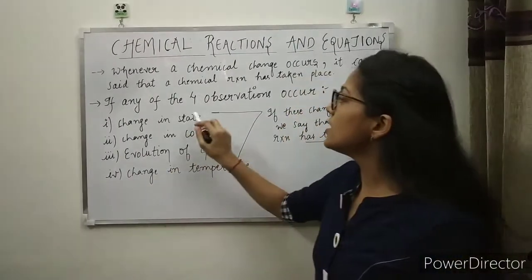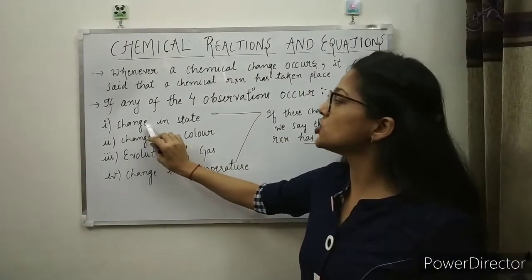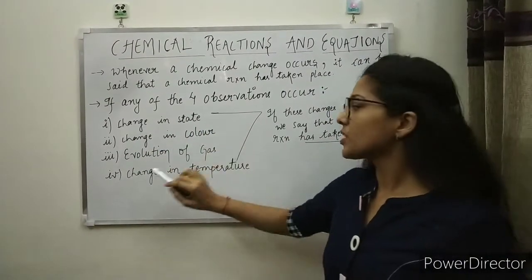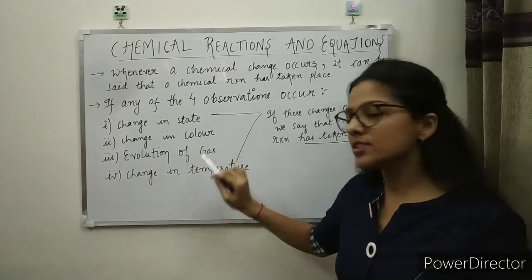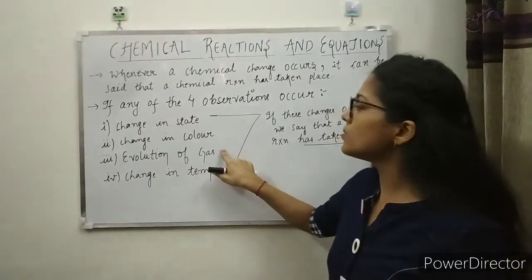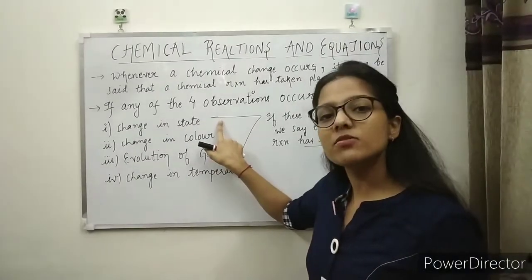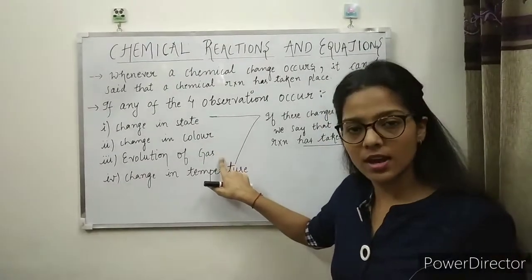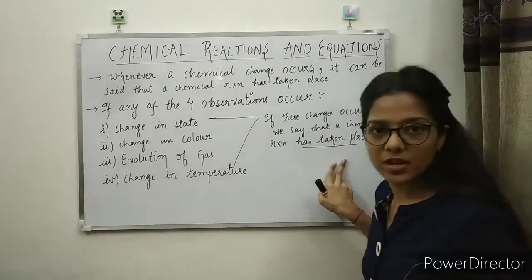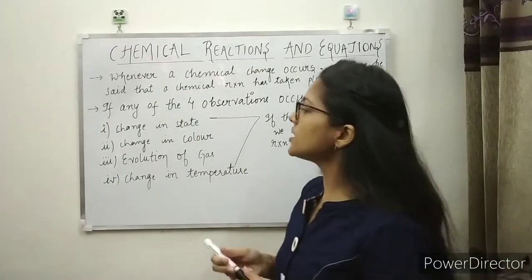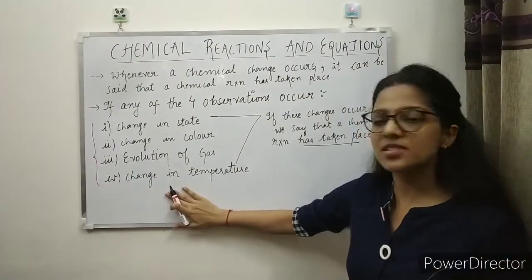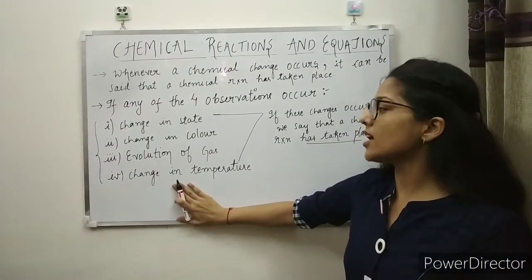Now what are those four observations? Number one is the change in state. Second is the change in color. Third is the evolution of gas, and fourth is the change in temperature. So if you observe any of these four observations, we say that a chemical reaction has taken place. Basically these four things give us the basis for a chemical reaction to occur.